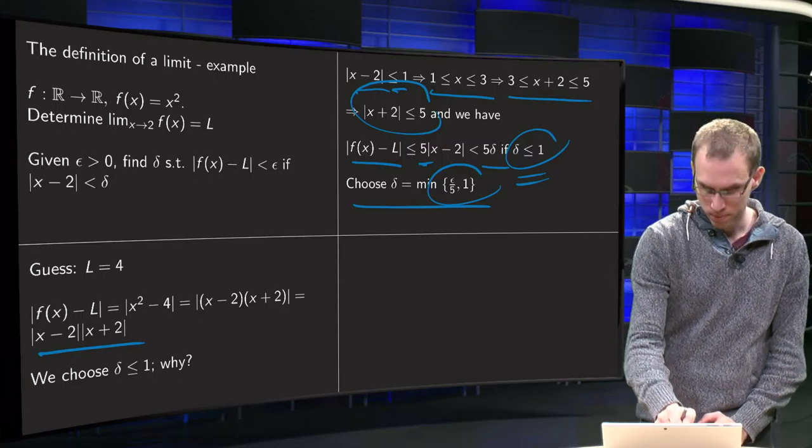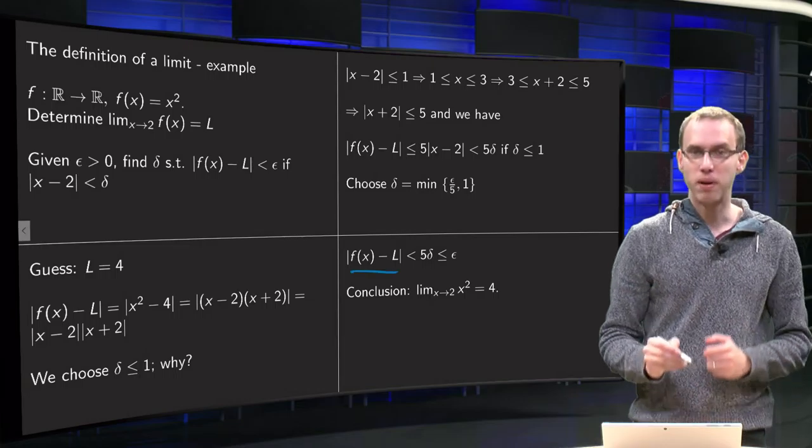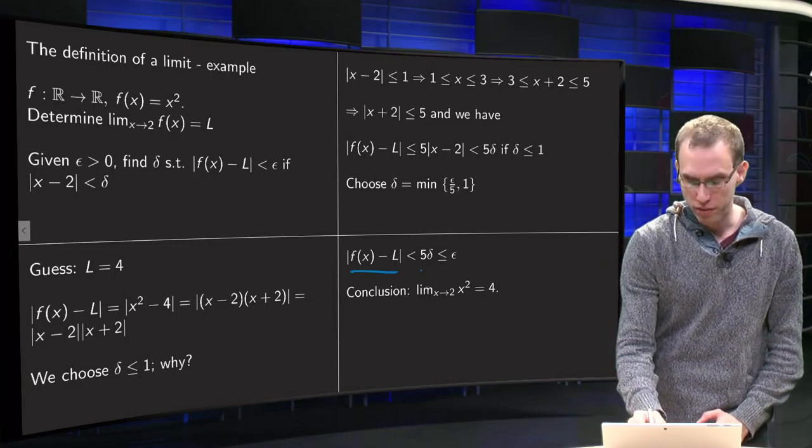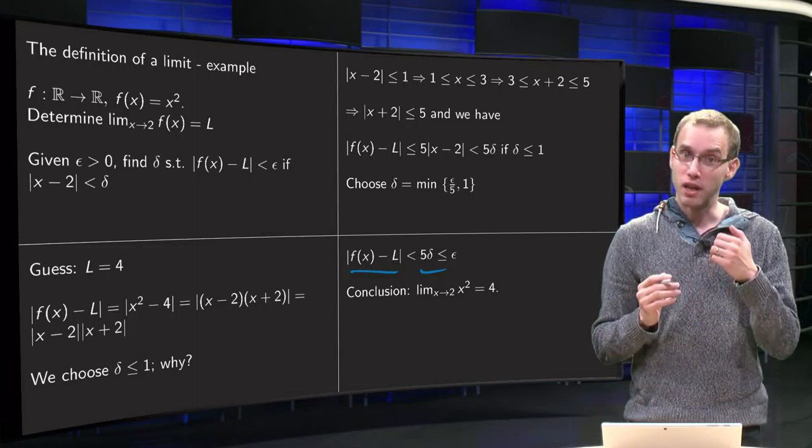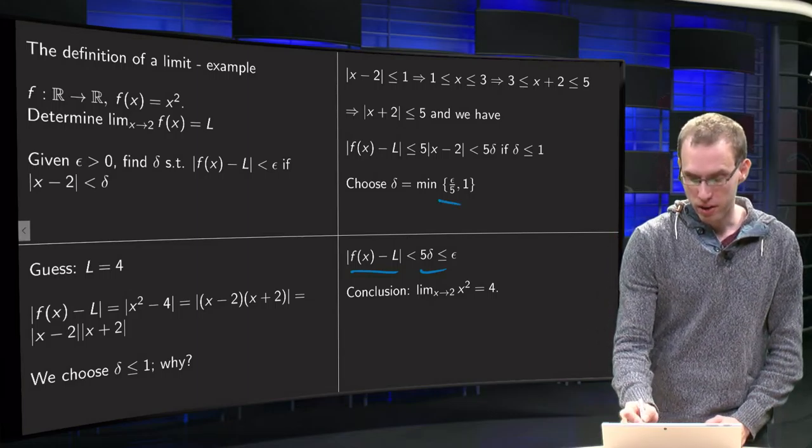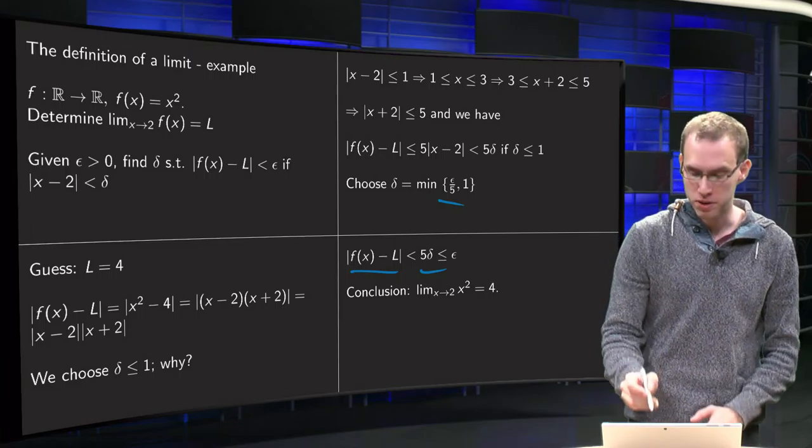And why this? Well we had |f(x) minus L| was smaller than 5δ. Delta is the minimum of epsilon over 5 and 1, so delta is smaller than or equal to epsilon over 5, so 5 times delta is smaller than epsilon.